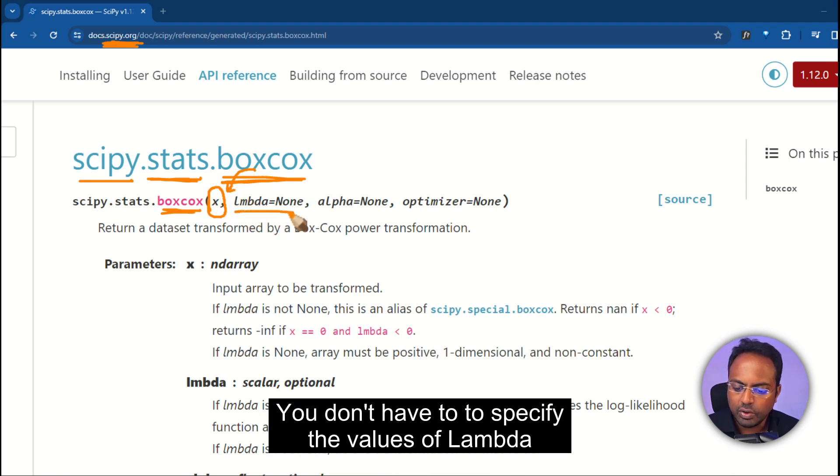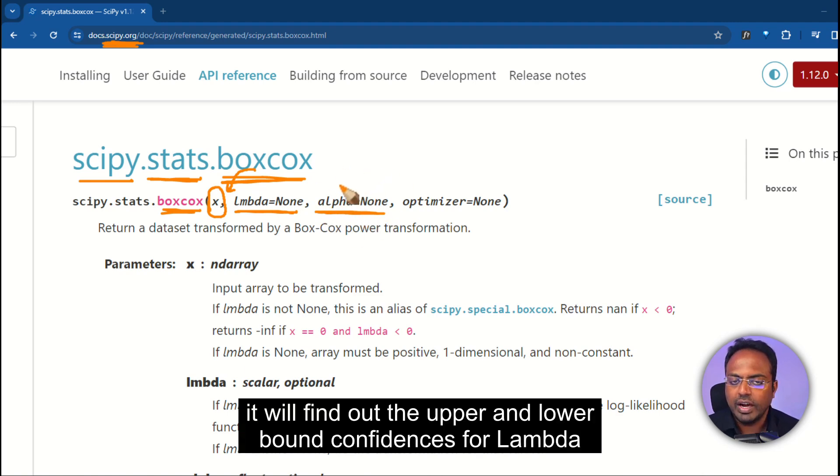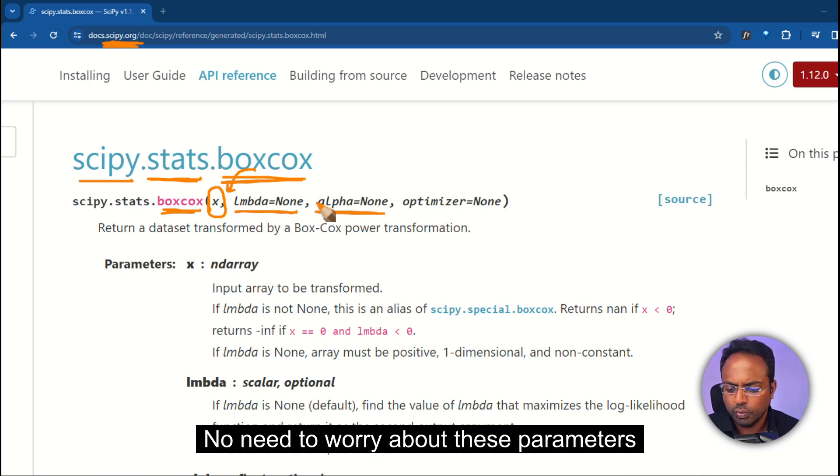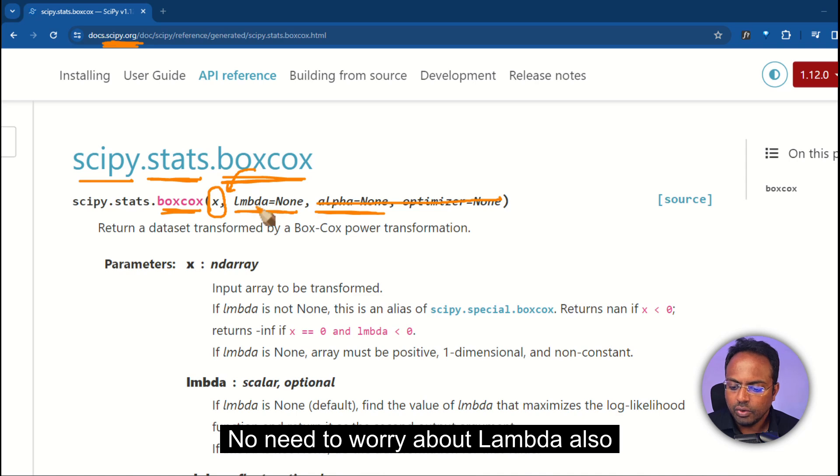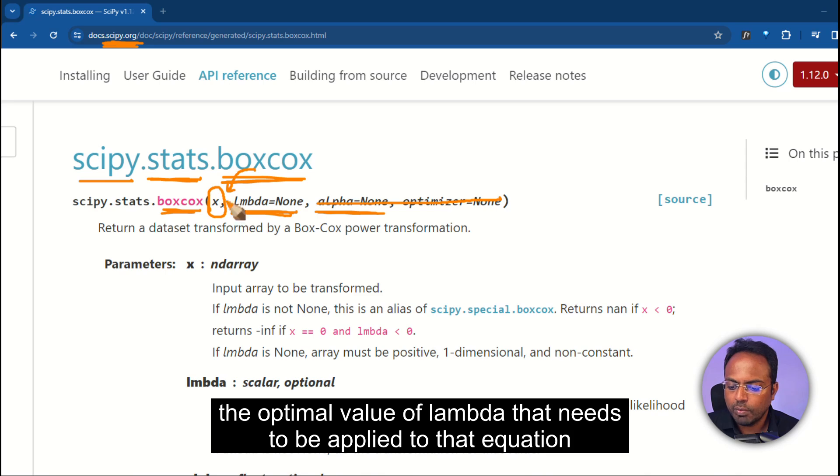You don't have to specify the values of lambda. If you set the alpha, it will find out the upper and lower bound confidences for lambda. No need to worry about these parameters, and no need to worry about lambda also. You can leave it as it is. Just pass the x to Box-Cox. That will determine what should be the optimal value of lambda that needs to be applied to that equation.